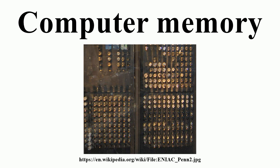There are two main types of semiconductor memory: volatile and non-volatile. Examples of non-volatile memory are flash memory and ROM, PROM, EPROM, and EEPROM memory. Examples of volatile memory are primary storage and fast CPU cache memory. Most semiconductor memory is organized into memory cells or by stable flip-flops, each storing one bit. Flash memory organization includes both one bit per memory cell and multiple bits per cell.